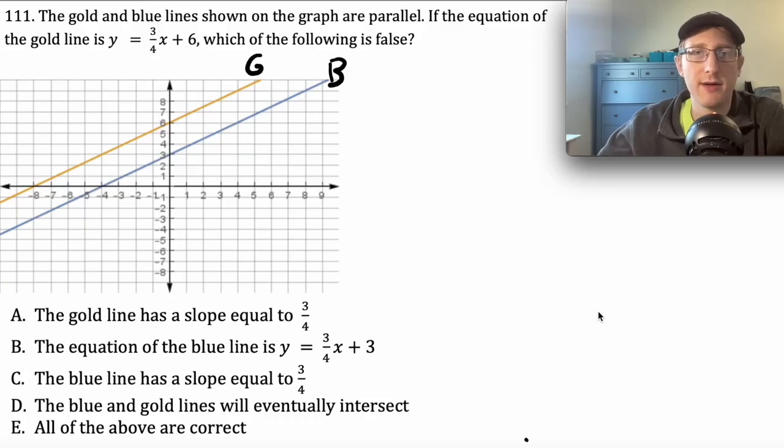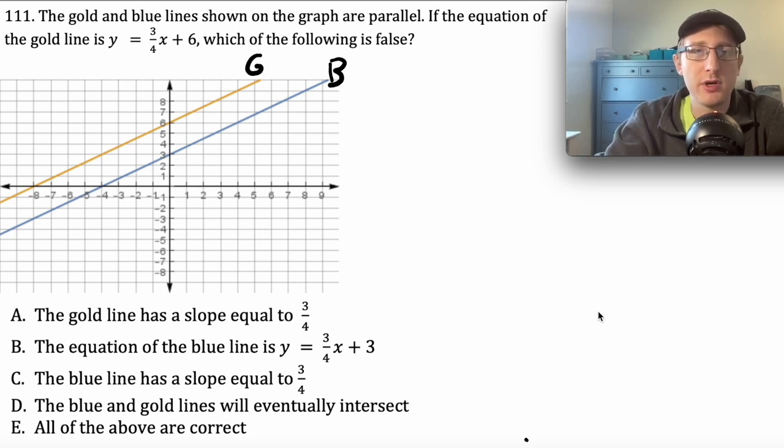The gold and blue lines on the graph are parallel. If the equation of the gold line is y equals 3 over 4x plus 6, which of the following is false? I wrote a G here on the top line to note that this is the gold line, and I put a B here on the lower line to note that this is the blue line. So we have answer choices a, b, c, d, and e.